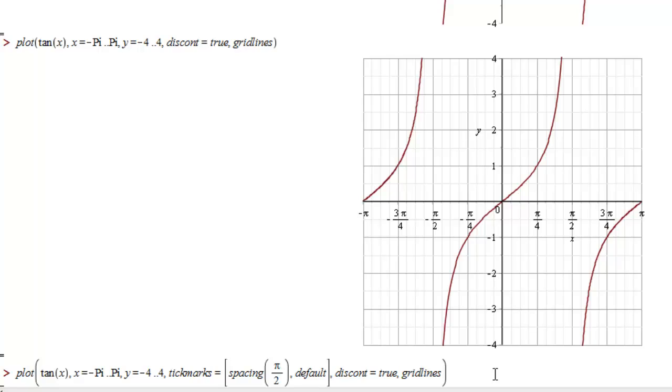So what this command is saying is to take the graph of tangent of x from negative π to π in the x direction and from negative 4 to 4 in the y direction, to space our tick marks π over 2 apart, to graph it as a discontinuous function so it suppresses those vertical lines, and to put grid lines on the graph.